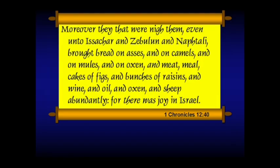Moreover, they that were near them, even unto Issachar and Zebulun and Naphtali, brought bread on asses and on camels and mules and on oxen — meat, meal, cakes, figs, bunches of raisins, wine, oil, oxen, and sheep abundantly. For there was joy in Israel. So now we get to the ark.